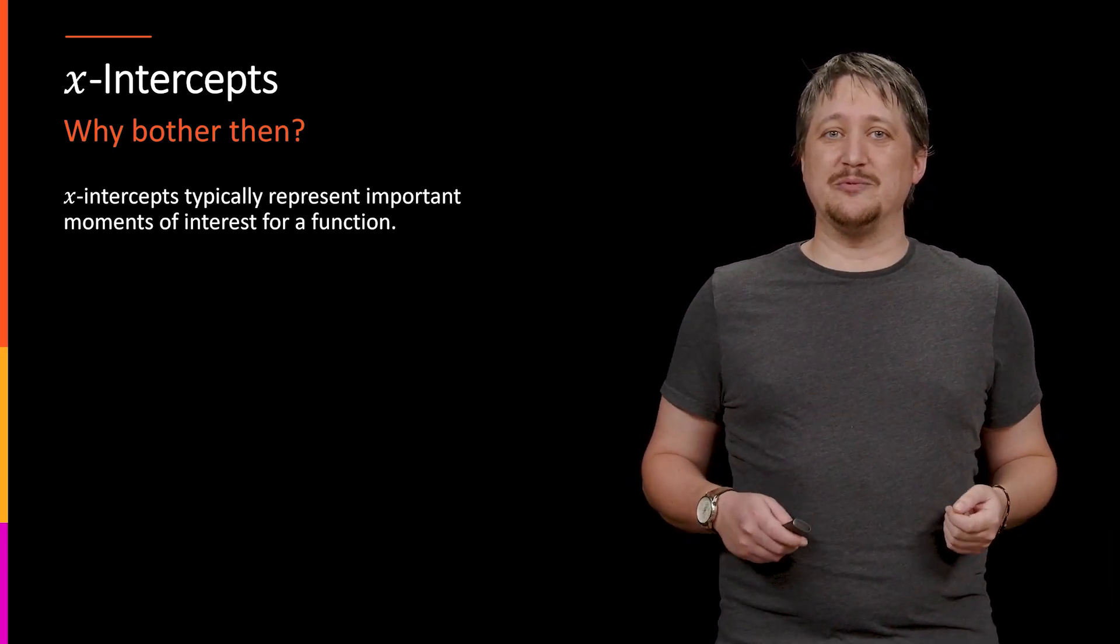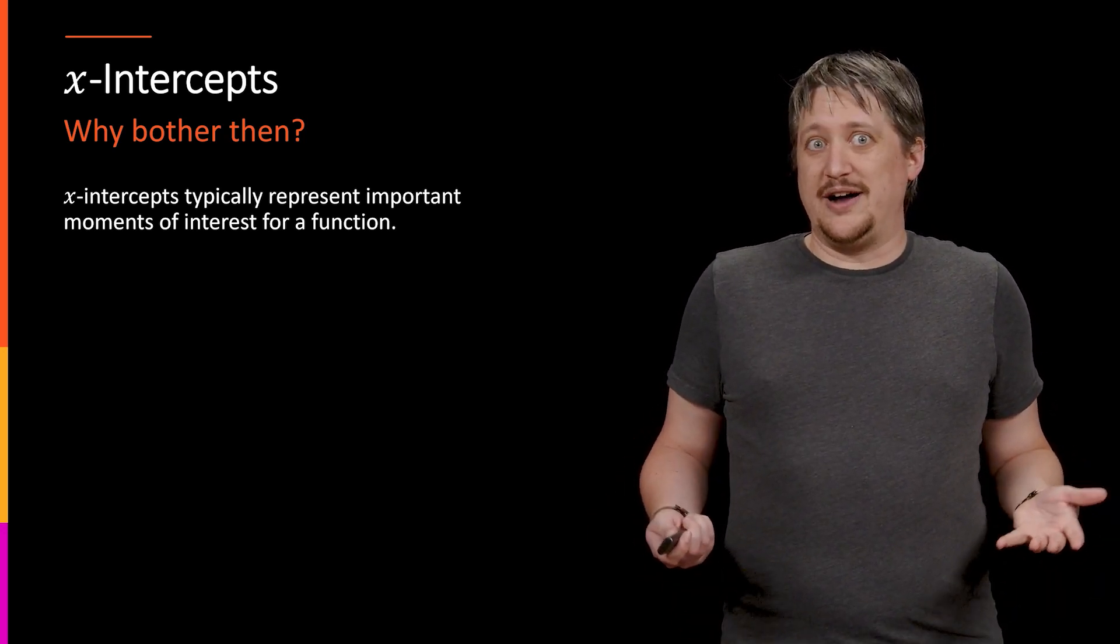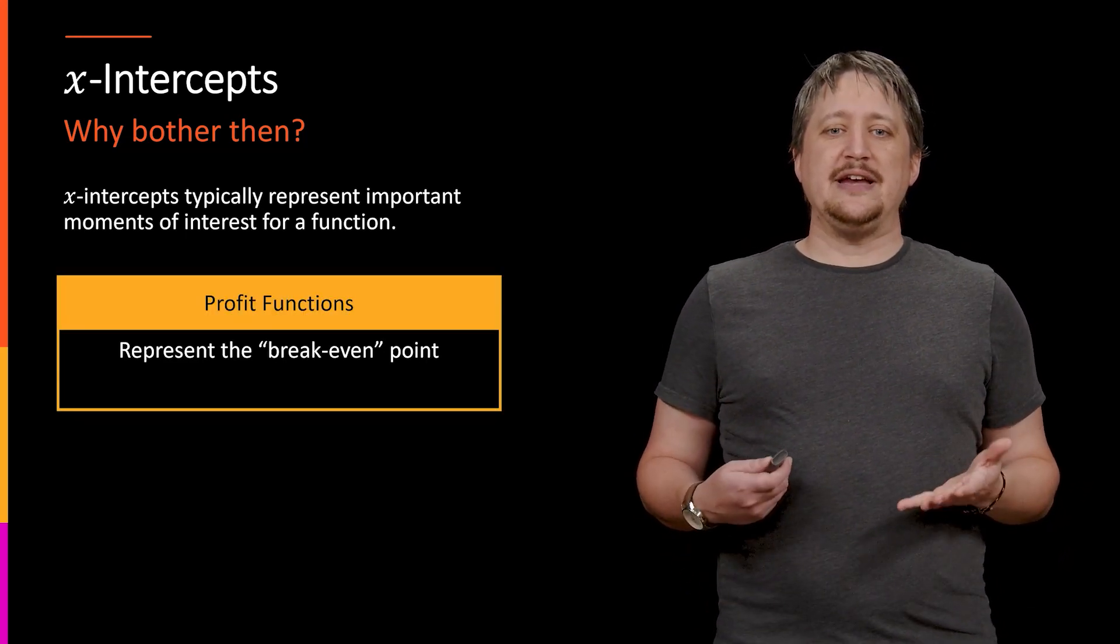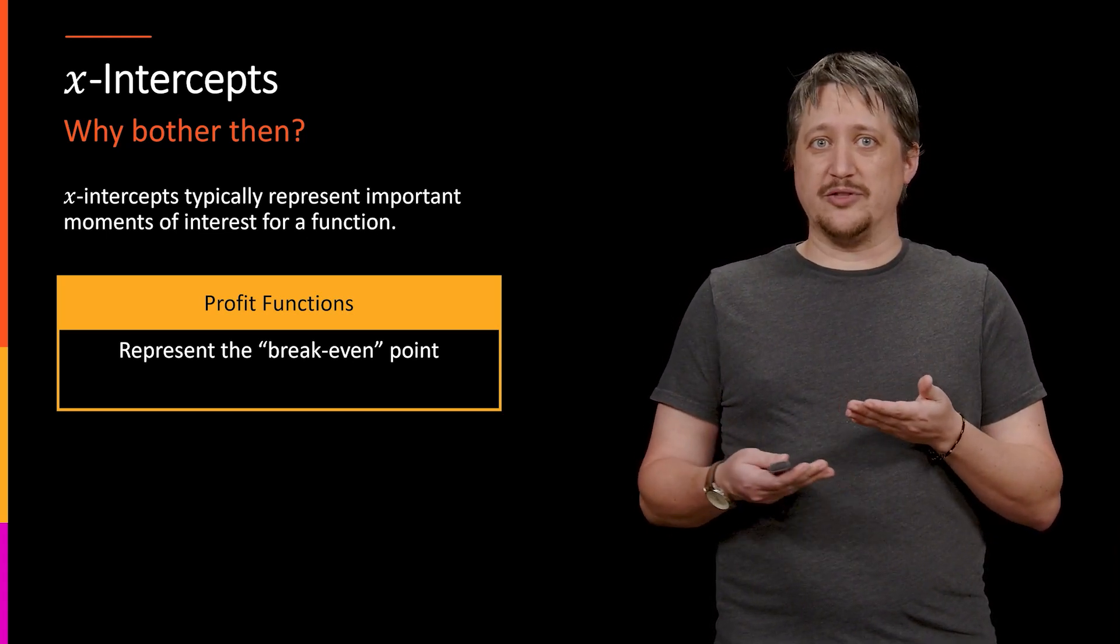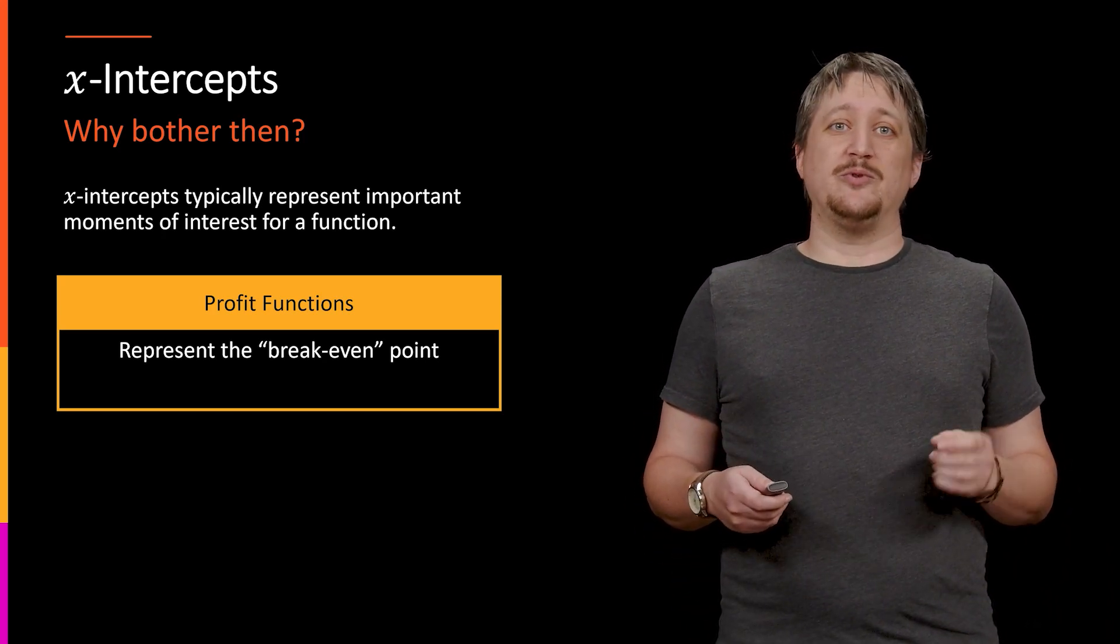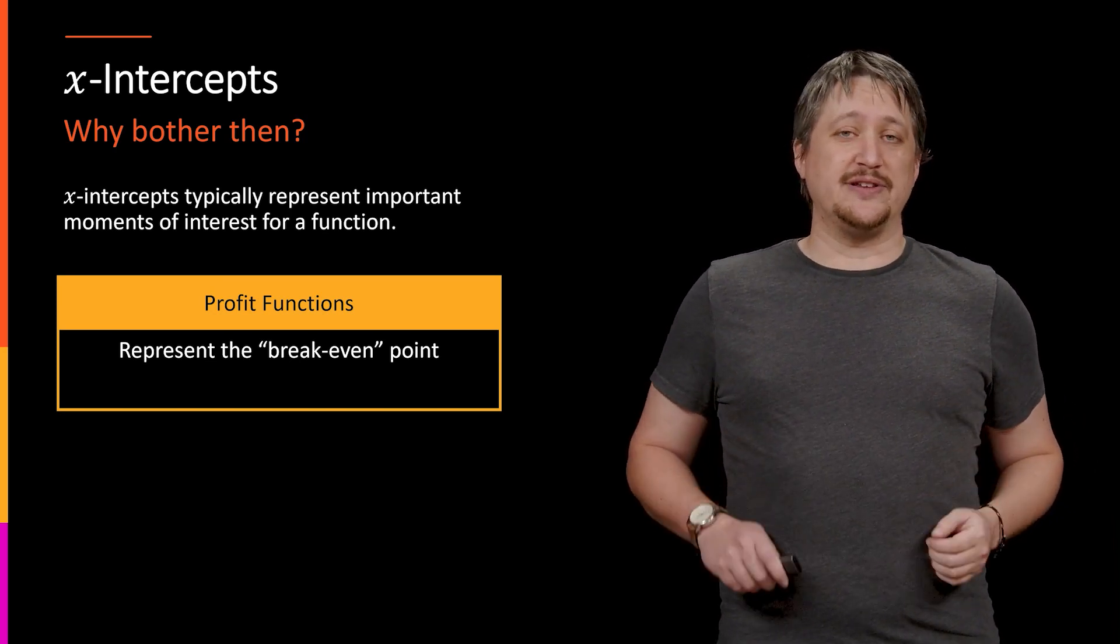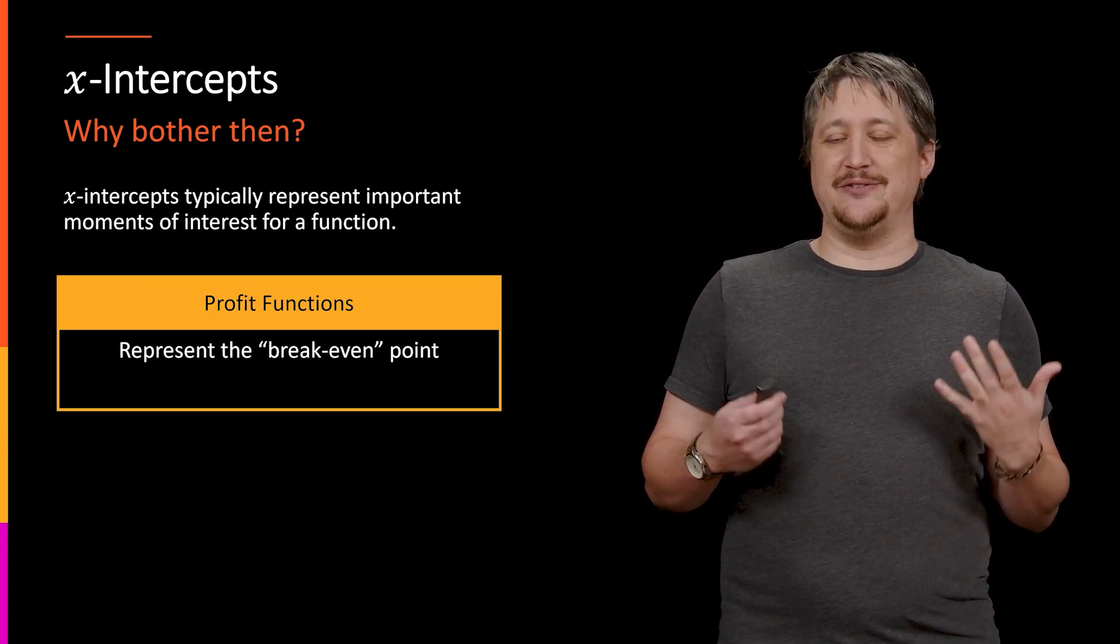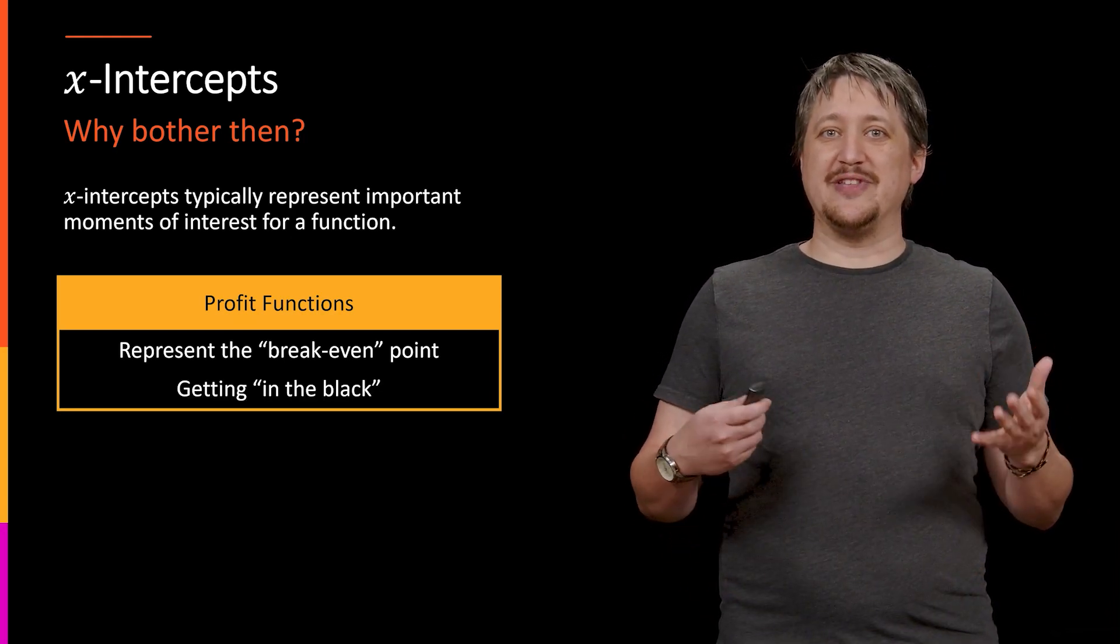The reason why is that these x-intercepts tend to actually represent really important things. We said this toward the beginning where x-intercepts tend to be of interest. Think about maybe profit functions. If we think about profit where the output is how much we made over whatever the costs were for any given situation, when that thing is zero, when the y value is zero, that's the x-intercept. That represents one of those break-even points, that moment where I'm finally not losing money and hopefully I'm about to be making money.